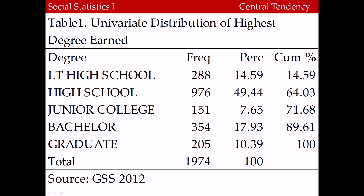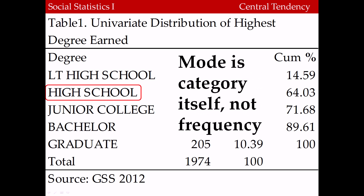Take a look at the following table. It shows the distribution of the variable highest degree earned. To calculate the mode for this distribution, we identify the category corresponding to the highest frequency or percent. Looking at the distribution, we see that the category high school is associated with 976 cases, or about 49% of the distribution, which is the highest overall. Therefore, the mode is high school. Note that the mode is the category itself, not the frequency.